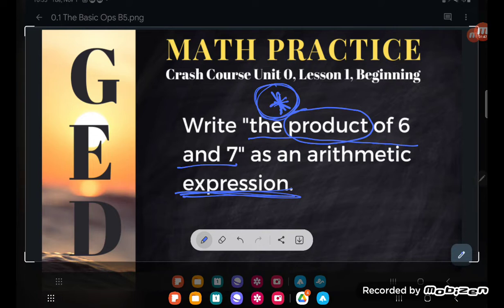So product says we're going to multiply. And what numbers are we going to multiply? Well, it's the product of six and seven. So we're going to multiply six and seven. Now, you could write it like this. You know, you're not wrong. Go ahead. Go for it. It's one of the right answers down at the bottom.